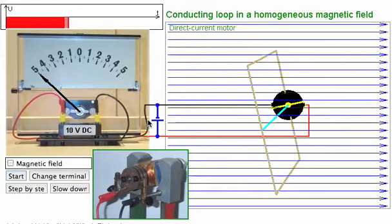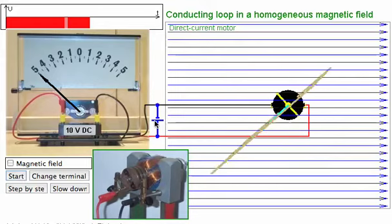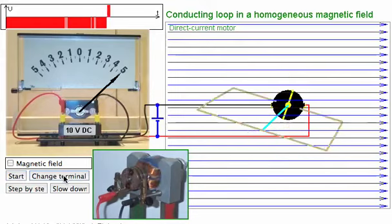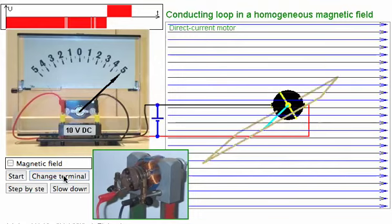Now we can change the terminal and that means we'd swap this from being positive to negative and vice versa. And there we go, it changes direction.